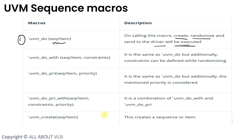The second macro is `uvm_do_with, where we provide the sequence item and a second argument which is a constraint. It is going to create the instance and randomize it, but with the constraints which we are providing as the second argument. This is similar to inline constraints.